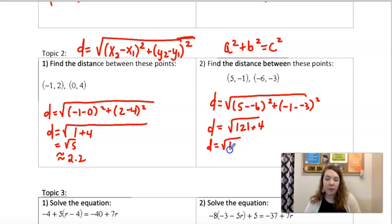So root 125 is 5 root 5 as a simplified radical or as a decimal if we had to round it. This would give us 11.2.